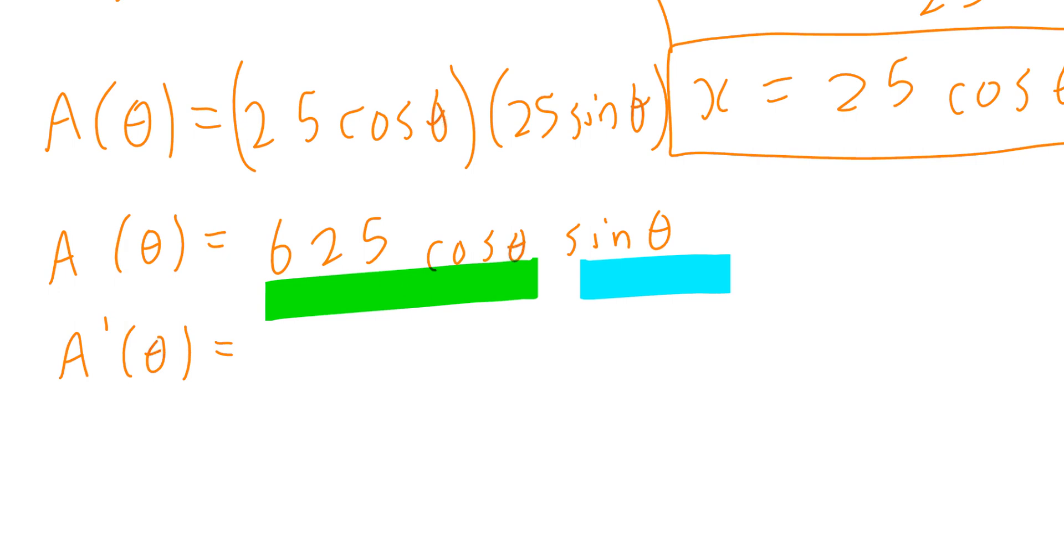I am going to attach 625 cosine theta as the first part and sine theta on its own. When you think about the product rule, there are five steps. A prime of theta is take the derivative of the first, which is negative 625 times sine theta, times copy the second part sine theta, plus copy the first part 625 cosine theta times the derivative of sine theta, which is cosine theta.